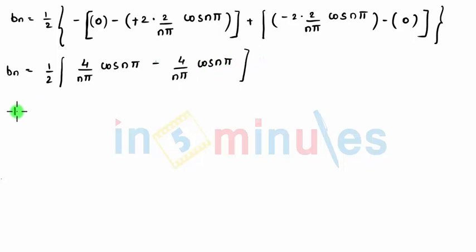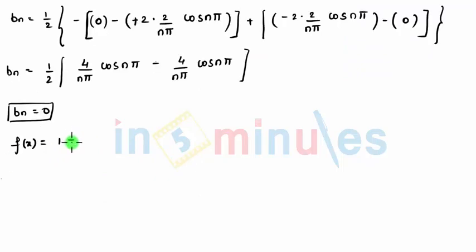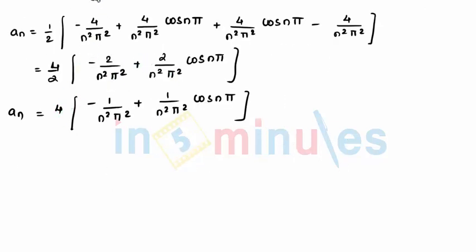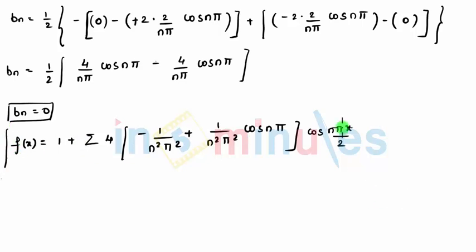We can say finally b_n = 0. So we write f(x) as the Fourier series: a_0 plus summation of a_n cos(n pi x / l). Since b_n = 0, we only need the cosine terms. a_0 came as 1, so we write 1 plus summation of a_n times cos(n pi x / 2). This is the final Fourier series.